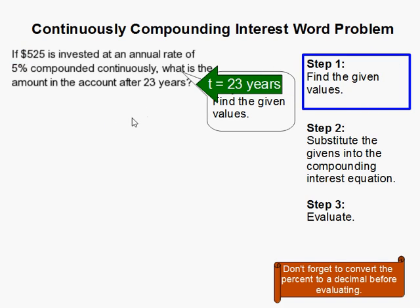Then we have time, which is 23 years. Make sure you note it in years. If you're given months, you have to convert that to a fraction.